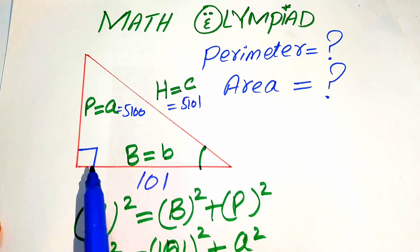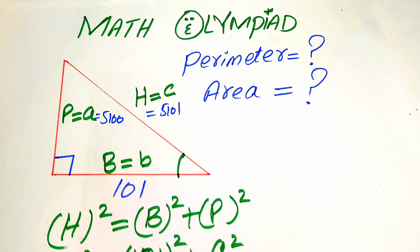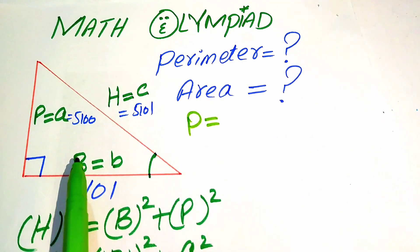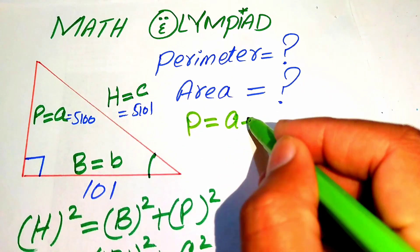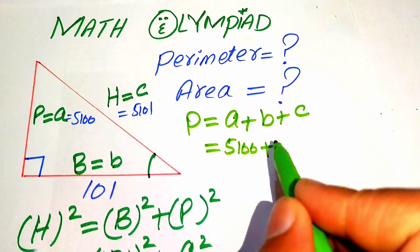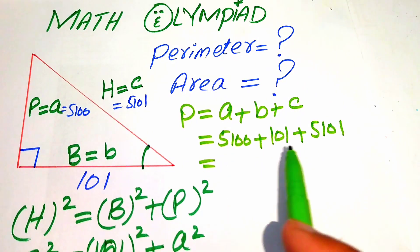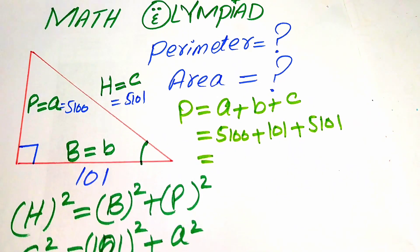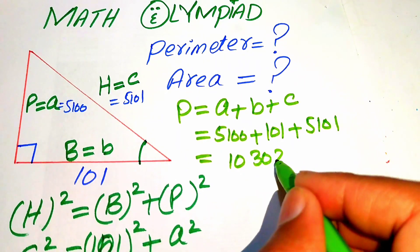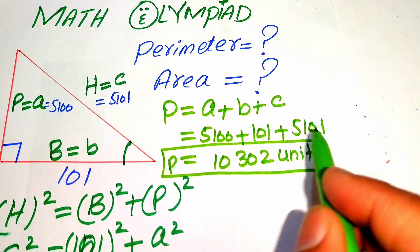Now we have all three sides of the right triangle and we move to find the perimeter. The perimeter of a triangle equals the sum of all three sides. We add a equals 5100, b equals 101, and c equals 5101. Adding these three values gives us 10302 units. So this is the perimeter of the given right triangle.